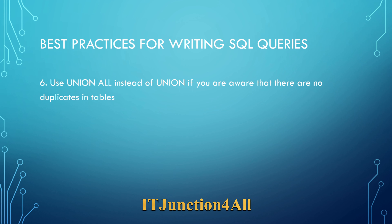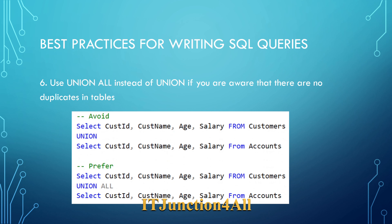The sixth point: use UNION ALL instead of UNION if you know there are no duplicates in the table. You can see the avoid query and the prefer query. UNION is slower than UNION ALL because UNION performs two extra operations — removing duplicates and sorting. That's why UNION ALL is preferred when there are no duplicates in the table.